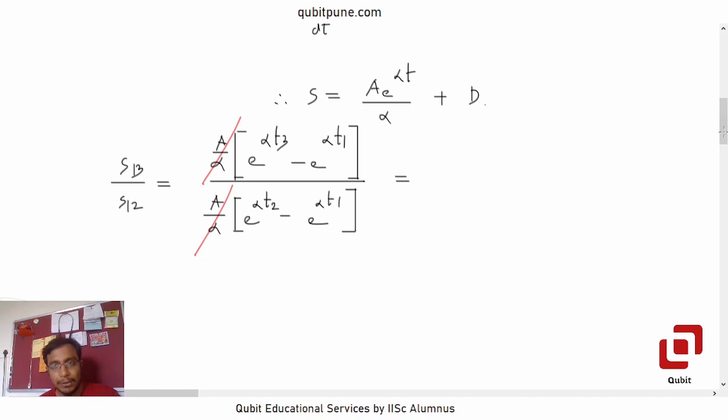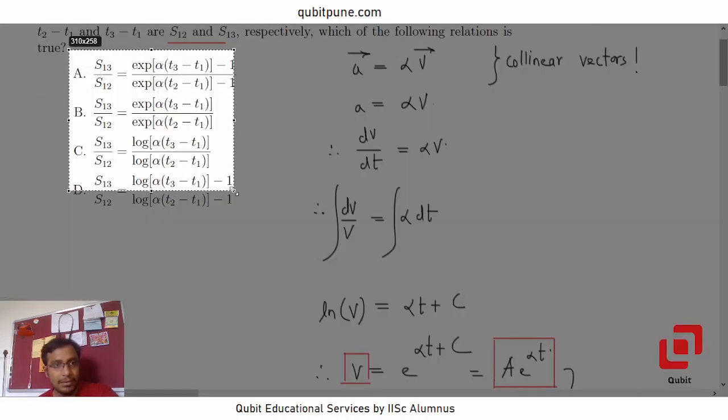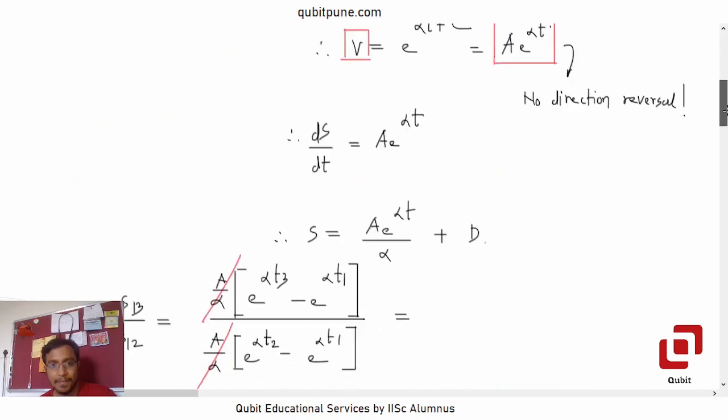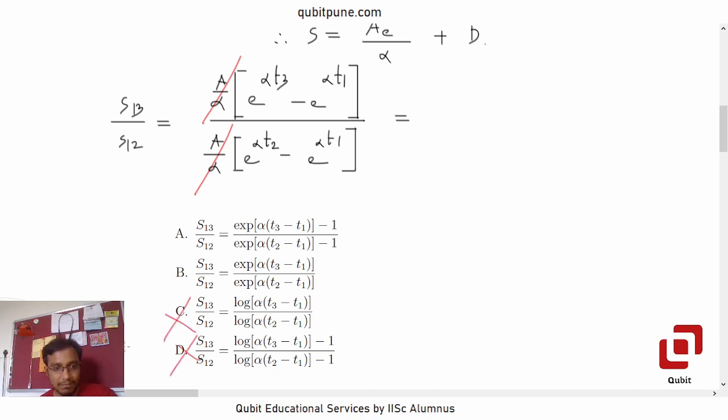Now, the thing is, we don't have this in our options, do we? Looks like we don't. For sure, options c and d are not there because they have log. And in our solution, we have only exponential functions.